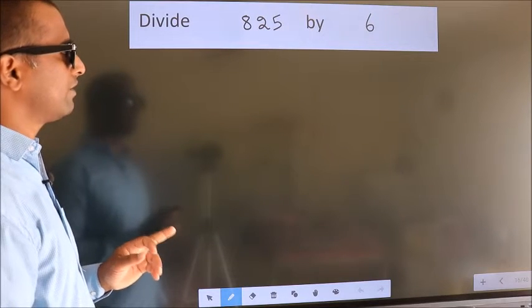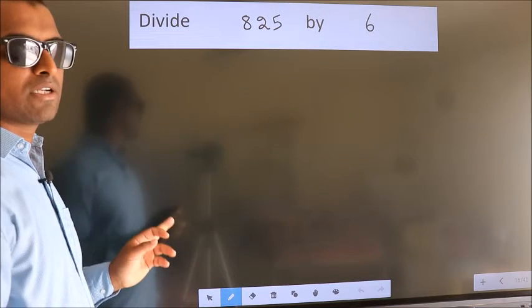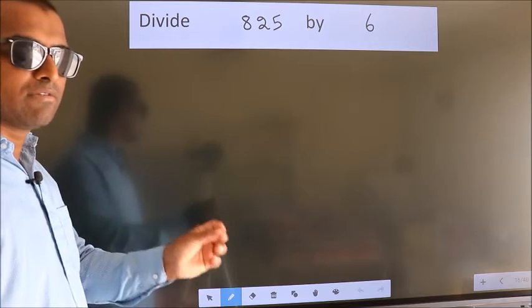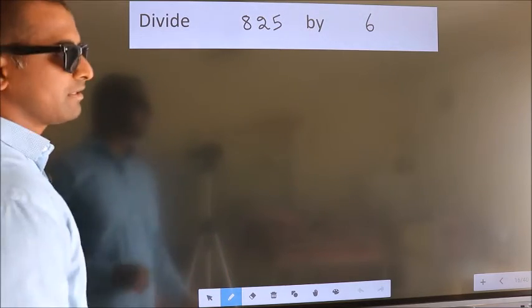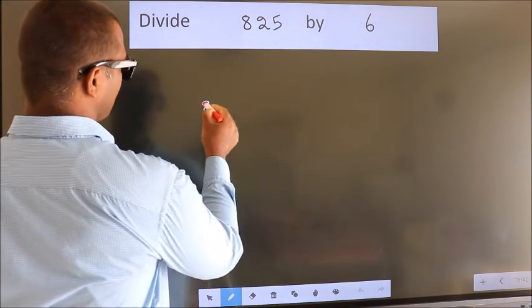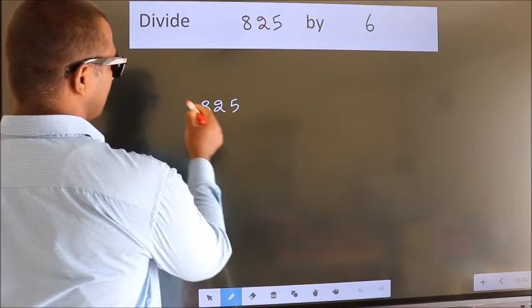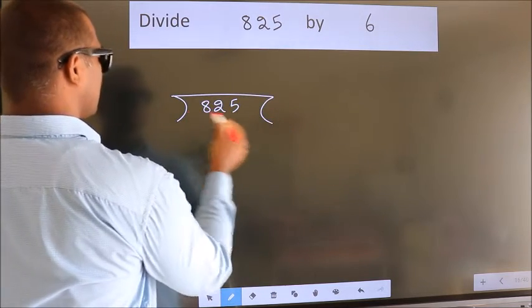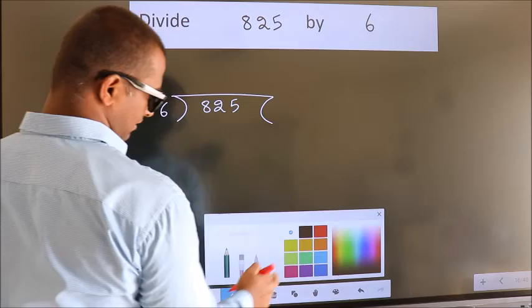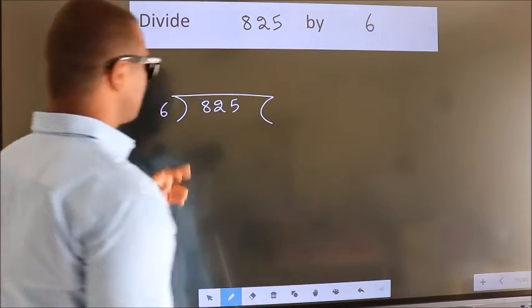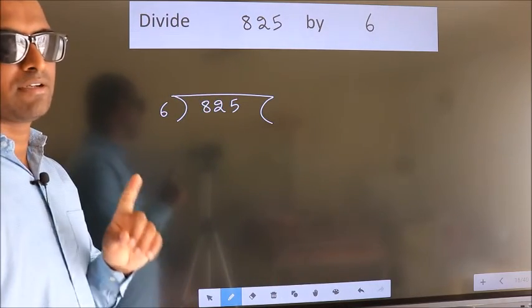Divide 825 by 6. To do this division, we should frame it in this way. 825 here, 6 here. This is your step 1.